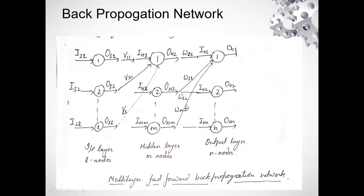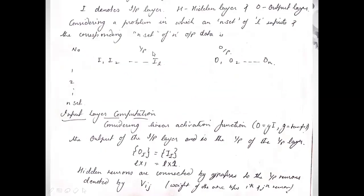Moving further, we are going to perform the computation and see how it is done at the input layer, at the hidden layer, and at the output layer. The input layer is denoted with I and has L number of nodes going from 1 to L. The output layer has N nodes going from 1 to N, and the hidden layer has M number of nodes denoted by H.